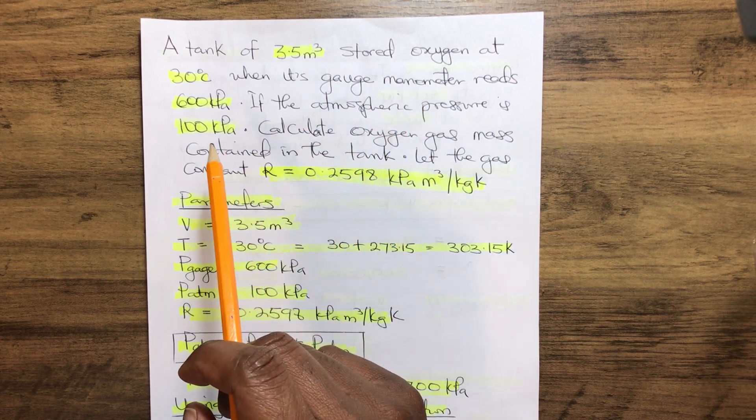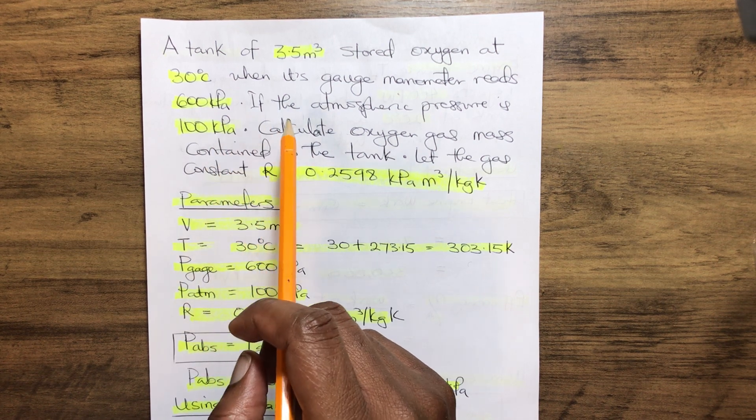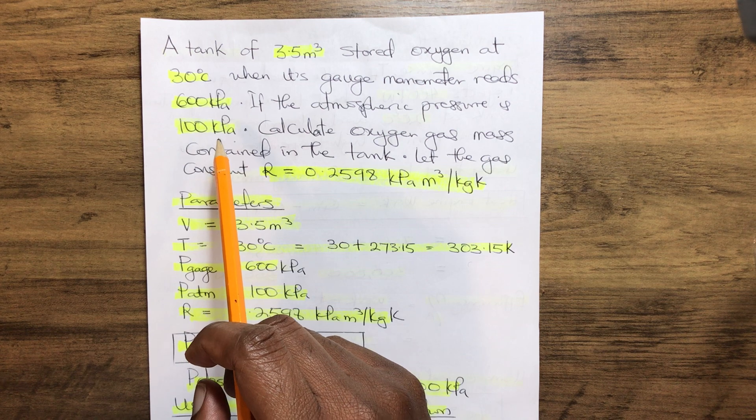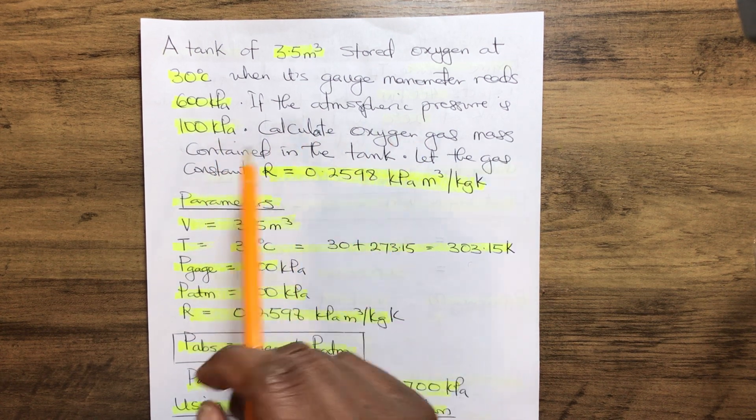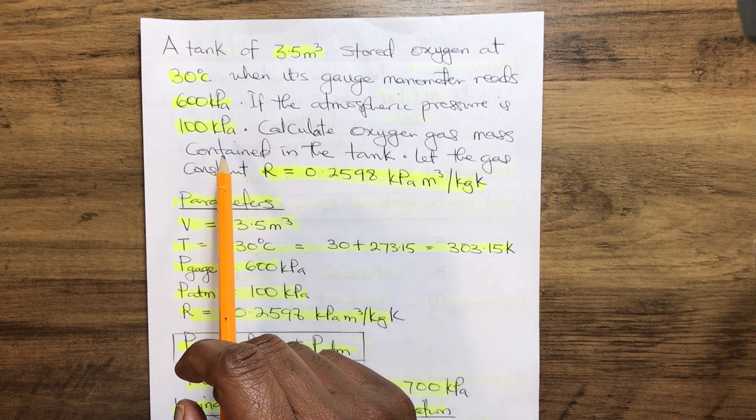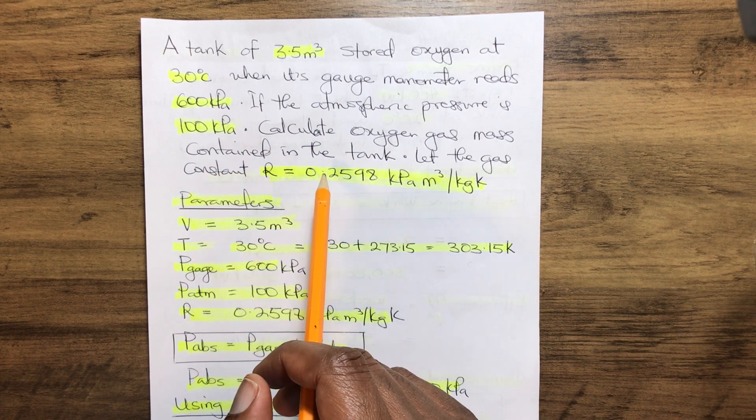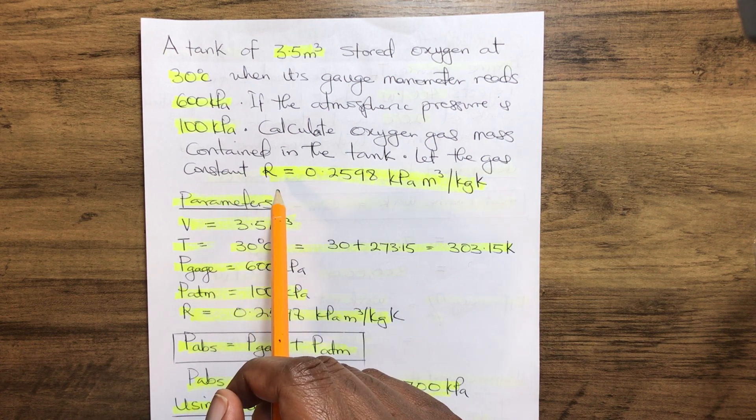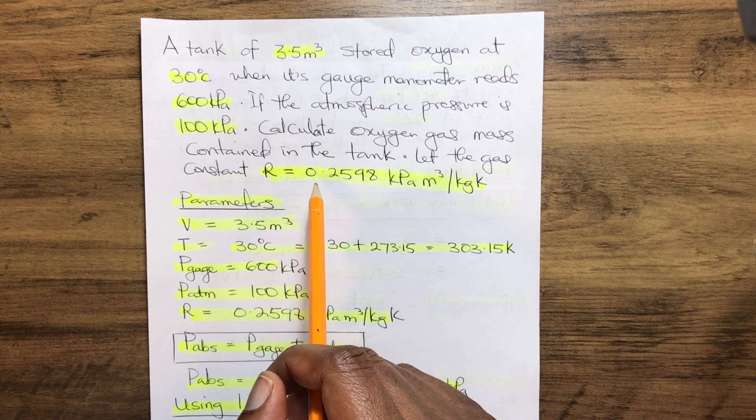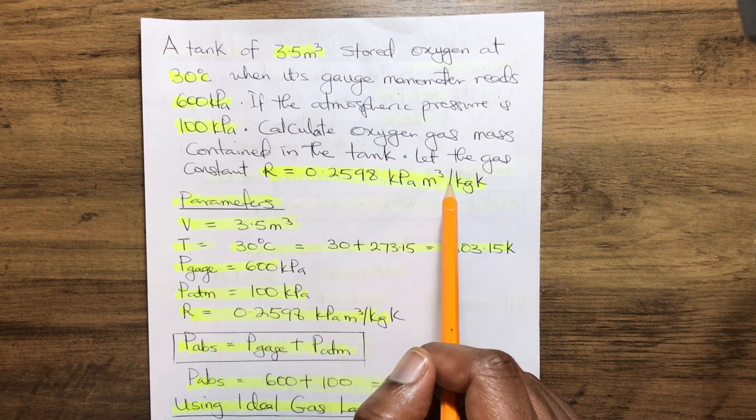...at 30 degrees Celsius when its gauge manometer reads 600 kPa. If the atmospheric pressure is 100 kPa, calculate the oxygen gas mass contained in the tank. Let the gas constant R for oxygen equal 0.2598 kPa·m³/(kg·K).